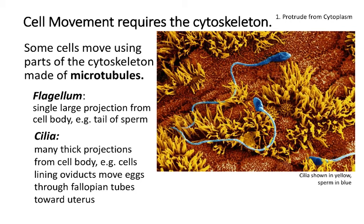The largest of the cytoskeletal proteins are called microtubules. Micro means small, tube refers to their shape, and the suffix -ule means tiny. So these are tiny tubes. They're proteins, which means they're made of amino acids. Flagella — the plural; a single one is called a flagellum — always occur singly in a cell. And as far as I'm aware, the only flagella that exist in humans are the tail on sperm.